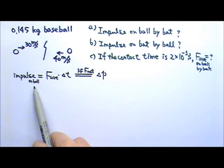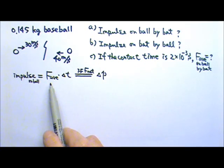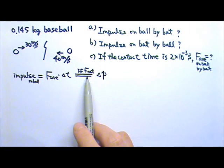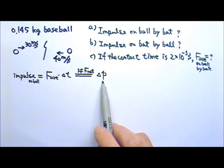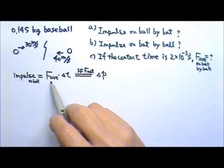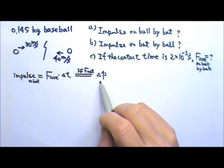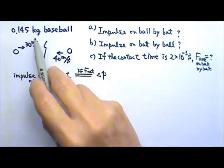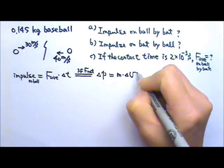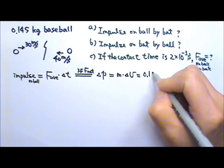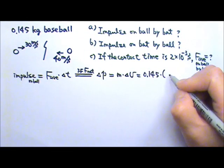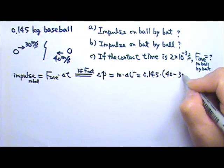The impulse on the ball by the bat is the average force on the ball by the bat times the time. Since this force is the net force on the ball, it is also the change in momentum of the ball. We have the time but not the force, so we need to use the change in momentum to find the impulse. So delta P equals m times delta v: the mass of the ball is 0.145, and delta v would be the final velocity minus the initial velocity, which would be 40 minus 30.